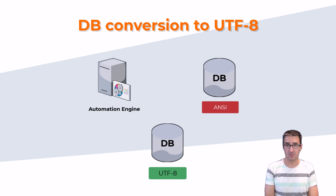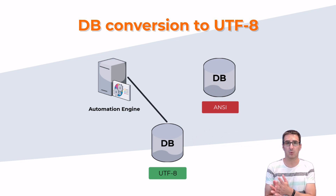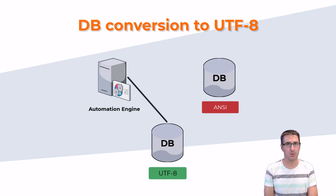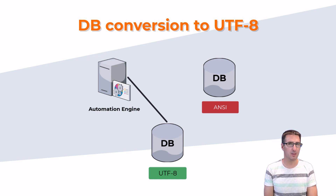Upon successful completion of the conversion process, switch to the copied database of your Automic system during the short downtime, concluding the migration to the Unicode database. The tool is accessible as an action pack, utilizing SQL statements to convert the data. Now you have a brief idea of what to expect from the UTF-8 update in Automic version 24.